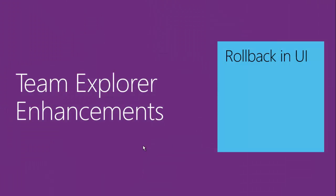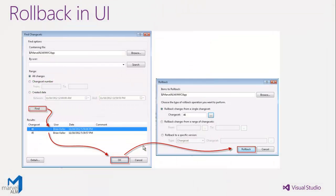Roll back in the UI: roll back was previously part of the TFS Power Tools and third-party tools, but now it is included out of the box with Visual Studio and Team Explorer 2012. You can simply roll back from the UI — no command line needed.